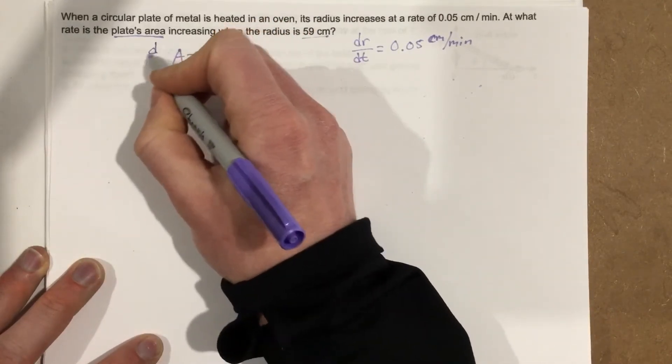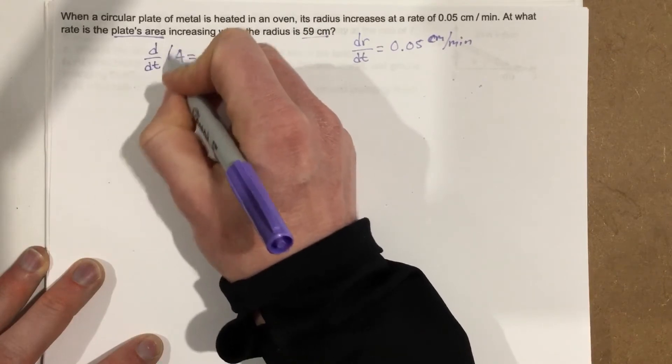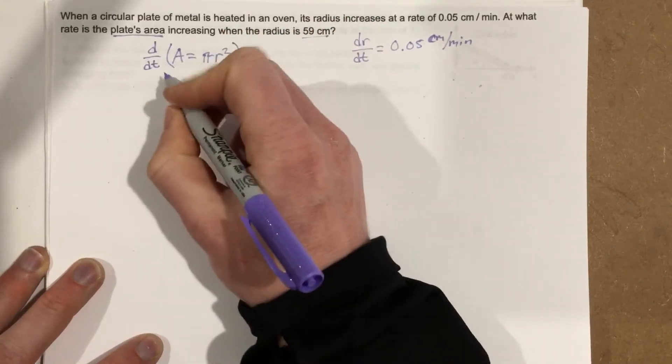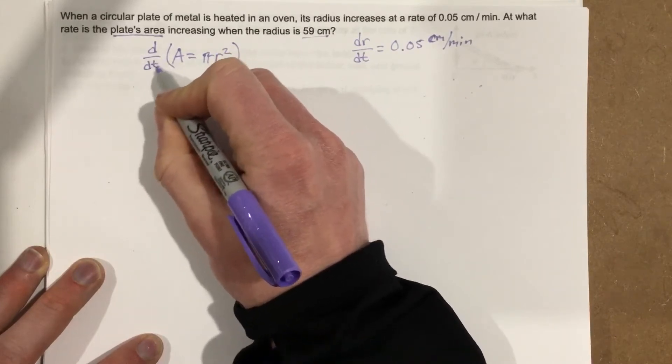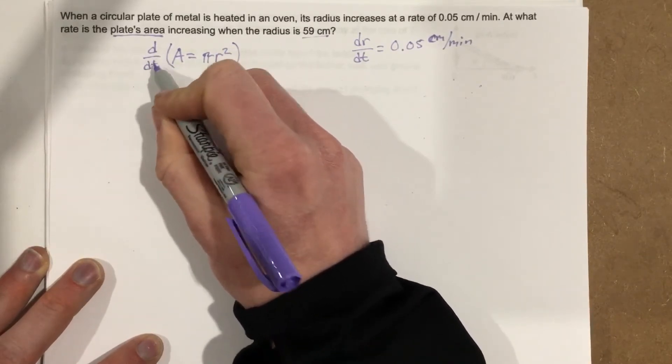So we're going to start by saying the derivative with respect to t of this area equation. Again, we have implicit differentiation because this is a t value that we're taking the derivative with respect to. We don't have any t variables here.